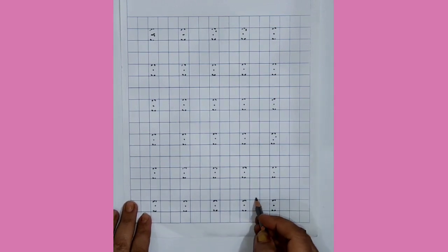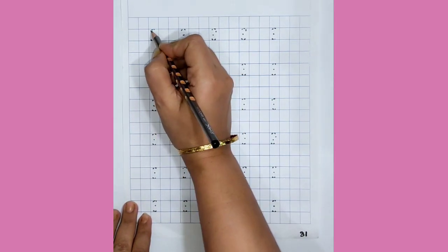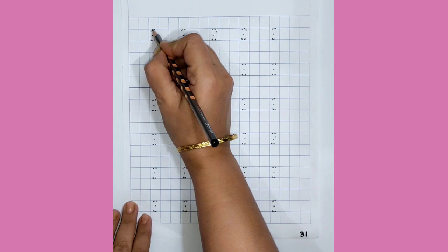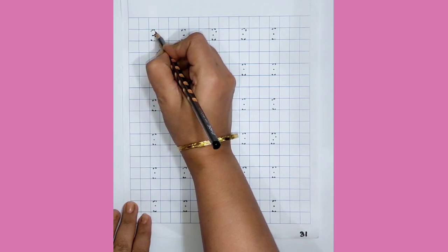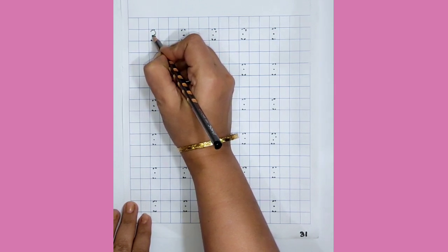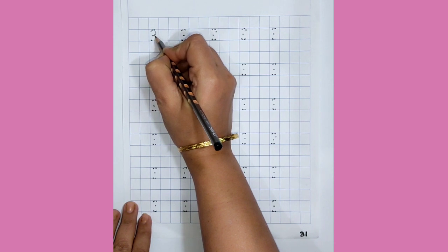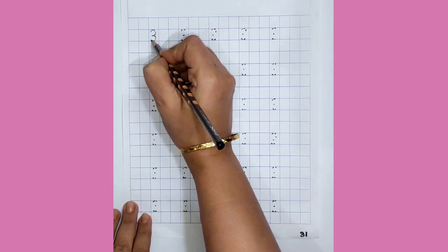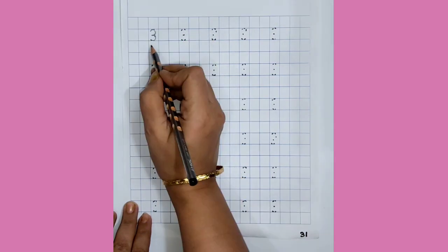First, keep your pencil here, then make a half a round and then again half a round. Which number? 3.